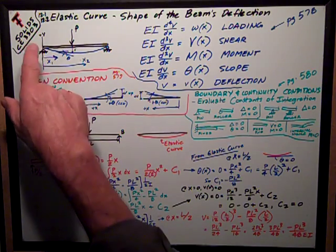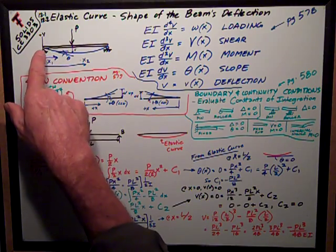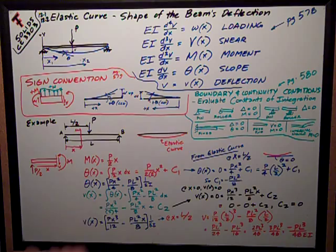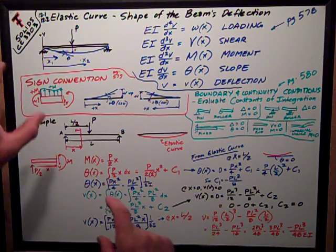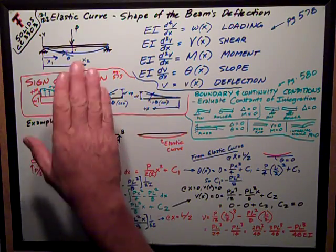We talked about how moment, positive moment, makes the beam curve concave up, like this one. Or negative moment makes the beam turn concave, slope concave down on the bottom side.